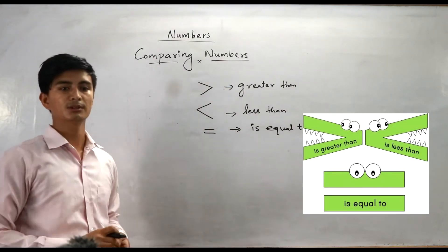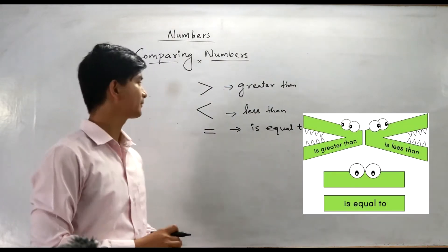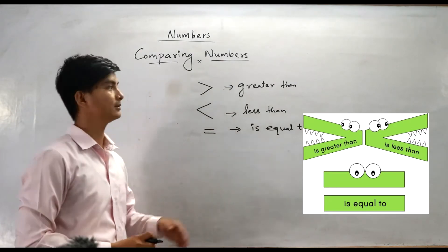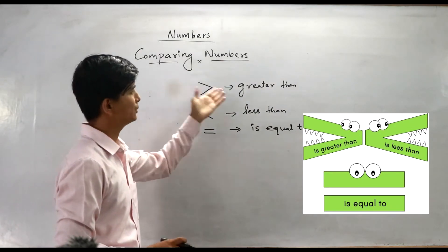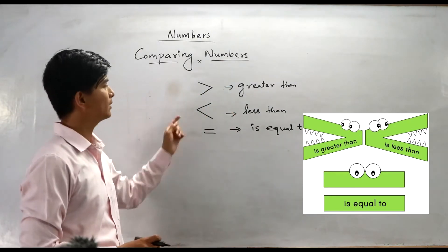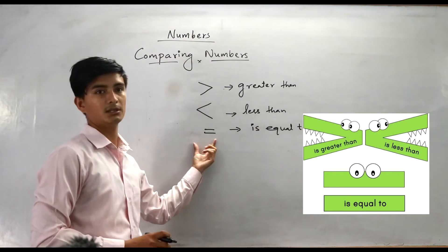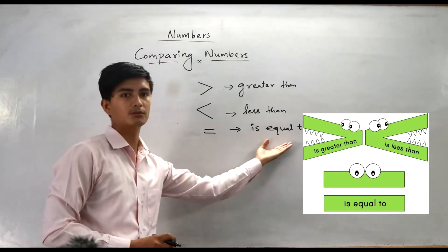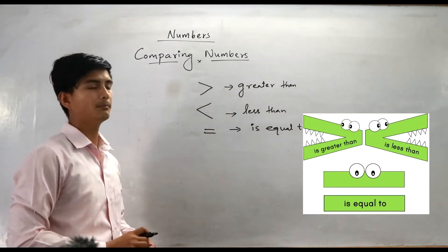These are the three symbols that you have to apply when comparing numbers. This symbol denotes greater than, this one is less than, and this one is equal to, or equality.